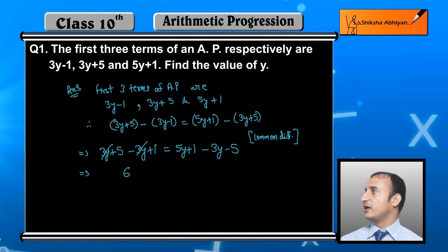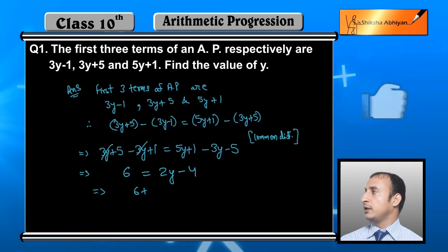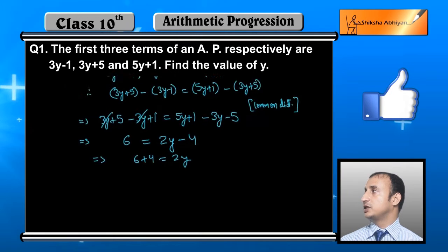This gives 5+1=6, and 5y-3y=2y, and 1-5=-4. Moving 4 to the left side makes it plus 4, so 2y equals 6+4, that is 2y=10.